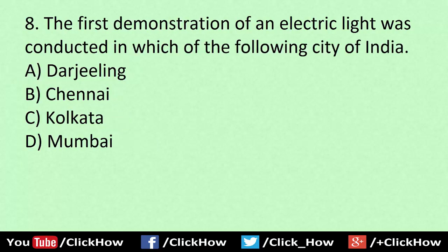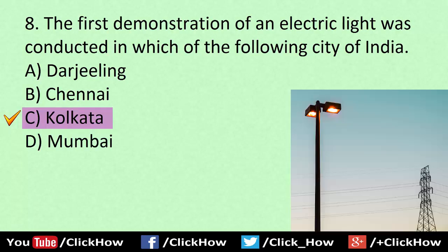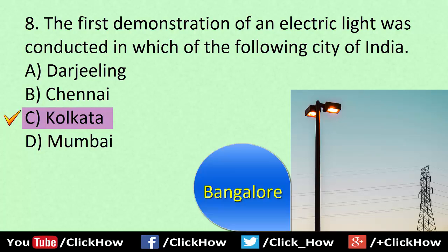The first demonstration of an electric light was conducted in which of the following cities of India? Answer is C, Kolkata. Another related GK question: the first electric street light in Asia was lit in Bangalore.